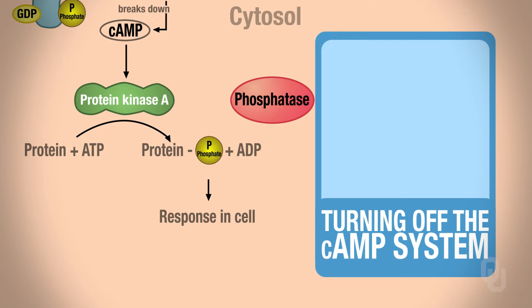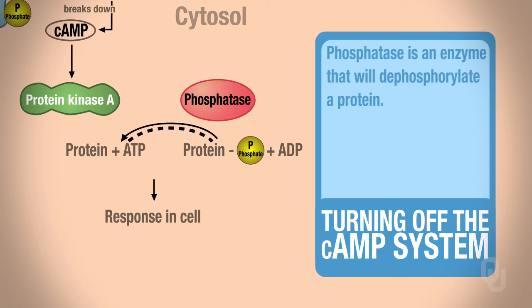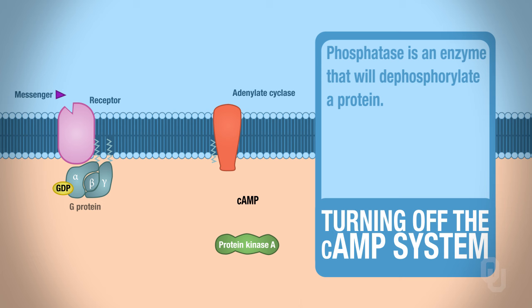We also have phosphatase, an enzyme that will dephosphorylate the protein. Remember, protein kinase A phosphorylated a protein, and as long as that protein remains phosphorylated, we'll still have a response occurring inside the cell. So phosphatase dephosphorylates the protein, and all of these steps together turn off the system. Phosphatase is also covalently regulated.